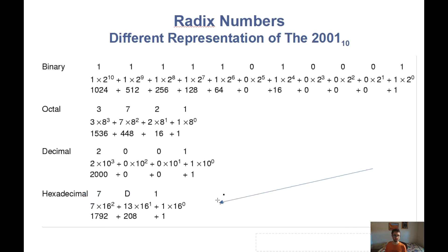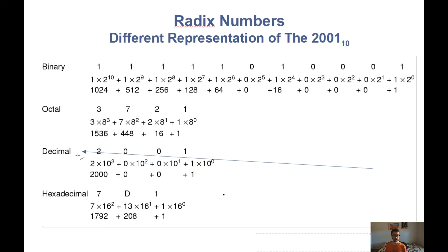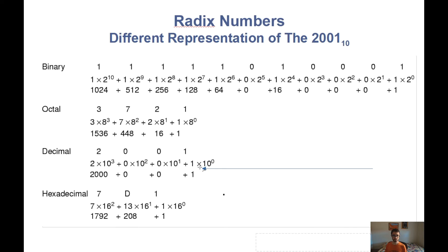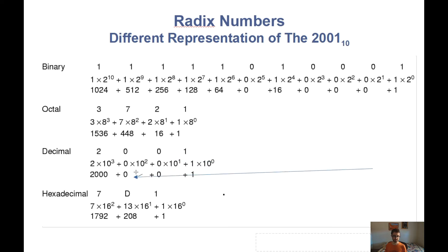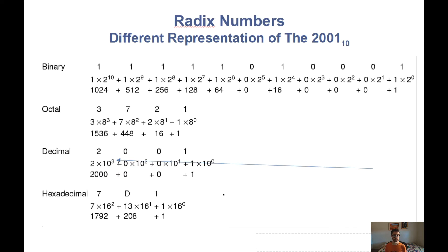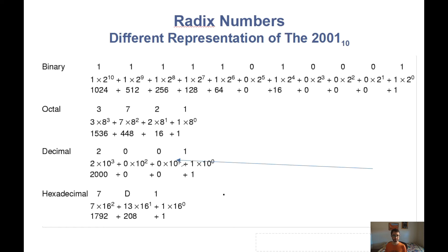Let's start with decimal, the system we're familiar with. In decimal, the 1 represents 1 times 10 to the 0. The next 0 represents 0 times 10 to the 1. The next 0 represents 0 times 10 to the 2. And the 2 itself represents 2 times 10 cubed. So 2000 plus 0 plus 0 plus 1 gives us 2001. Pretty familiar, hopefully.